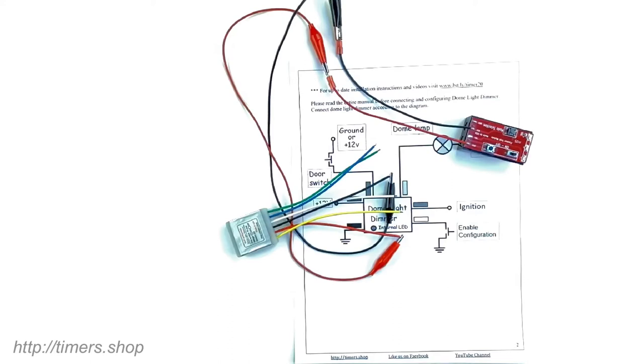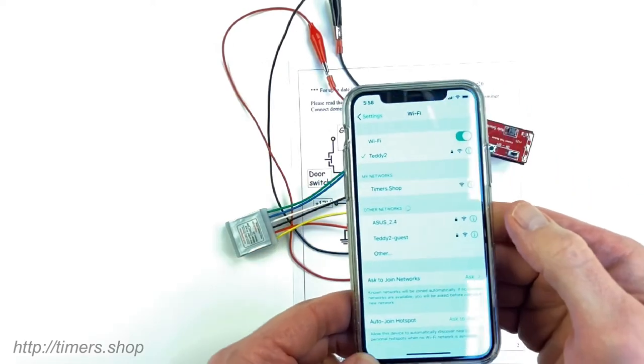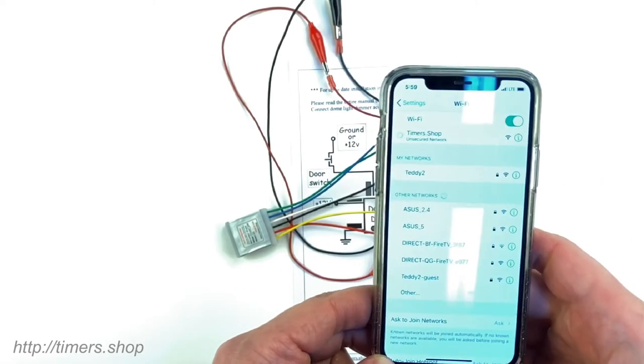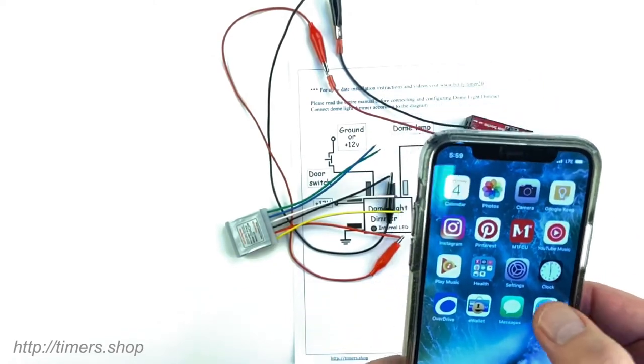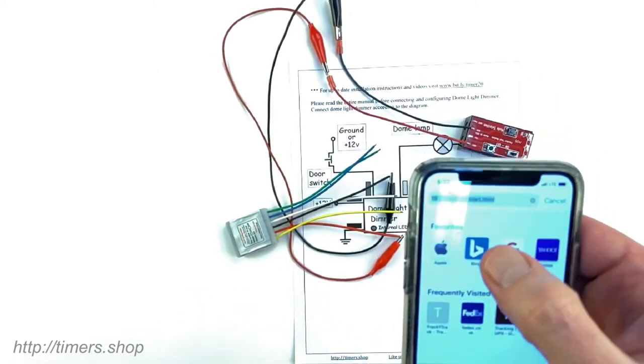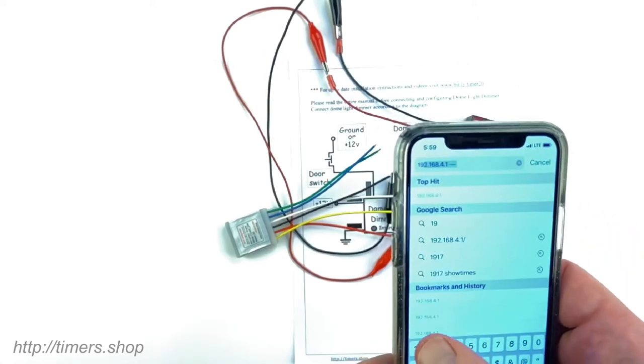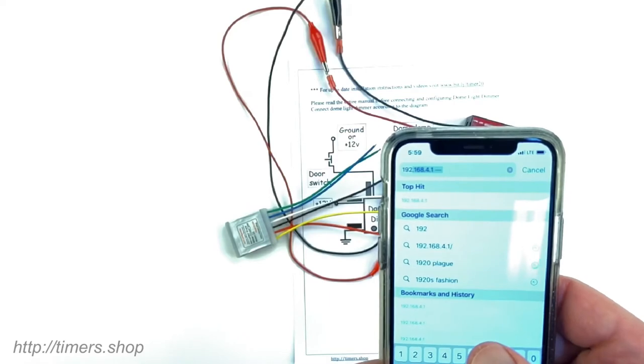In Wi-Fi configuration, I'm going to connect to Timershop, and then I'm going to open a browser and connect to the address 192.168.4.1.